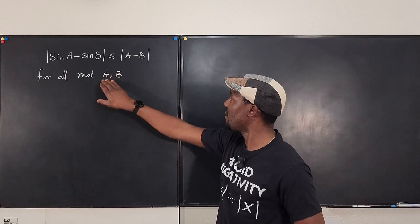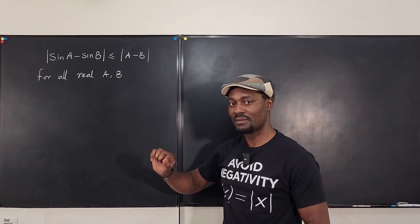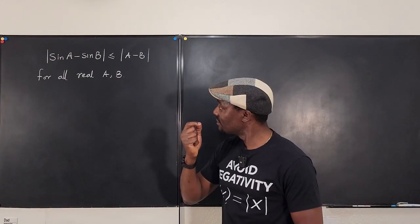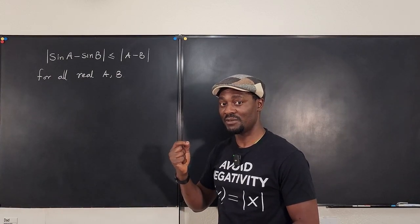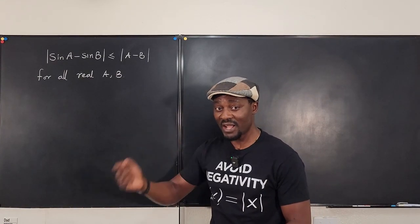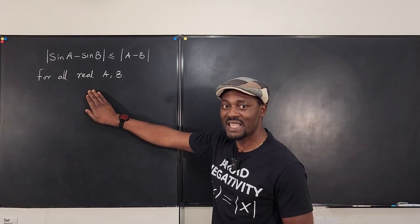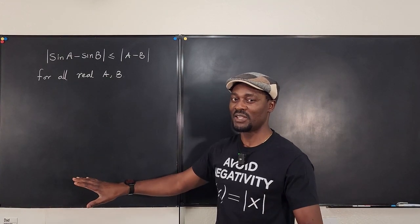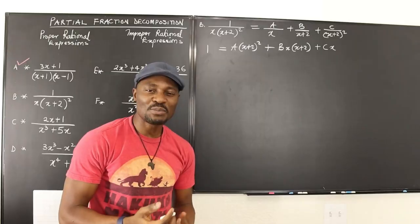So how do we know this is always true for all real angles a and b? We use the Mean Value Theorem — remember that from Calculus 1. We're going to apply that here and see how it goes. Let's get into it.